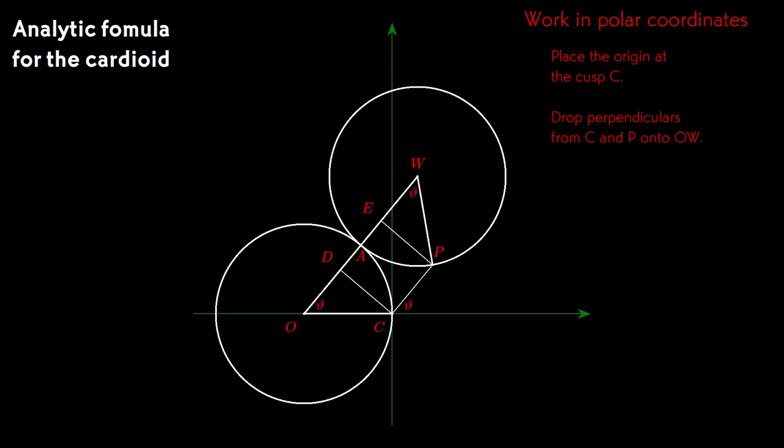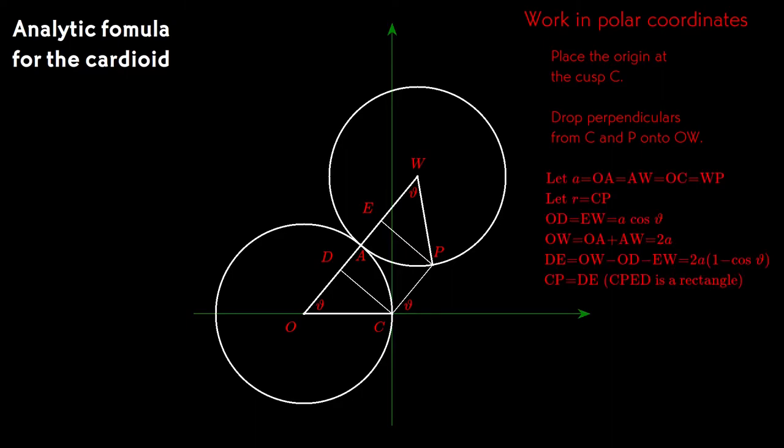It turns out that we get the simplest formula if we start with our coordinate system centered on the cusp. Let the radius of the wheels be A. If we take the line joining the centers of the wheels O and W, and drop perpendiculars onto that line at the points D and E, we get two new line segments OD and EW that are both of length A cos theta. Since the total length OW is 2A, we see that DE is 2A minus 2A cos theta, which is 2A times the quantity 1 minus cos theta.